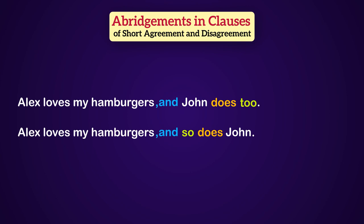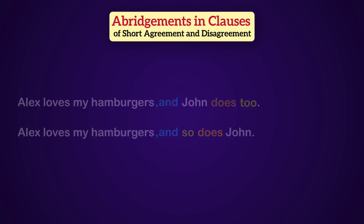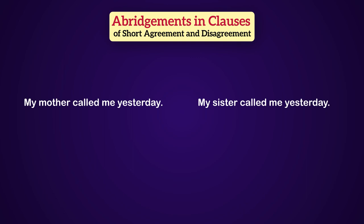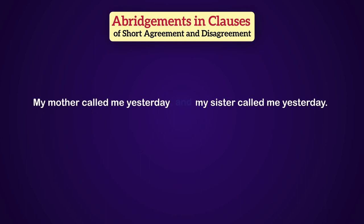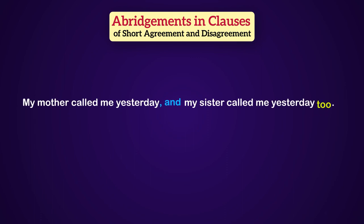This is the second way to show agreement. Let me give you another example. Here we have two sentences: one, my mother called me yesterday; two, my sister called me yesterday. These two sentences can be joined into one by the coordinate conjunction 'and,' and then we place 'too' at the end of the second clause: My mother called me yesterday, and my sister called me yesterday too.